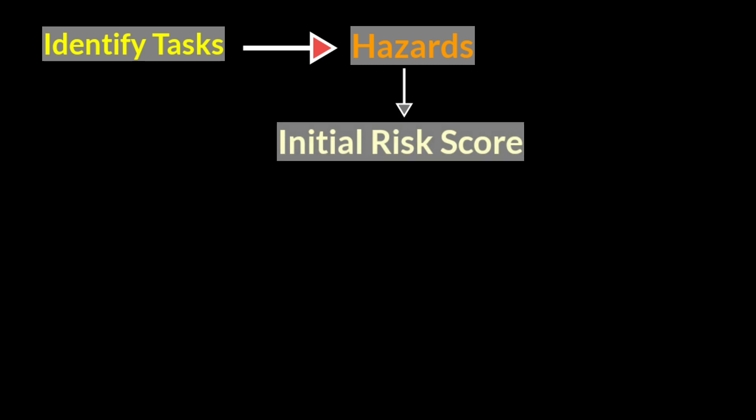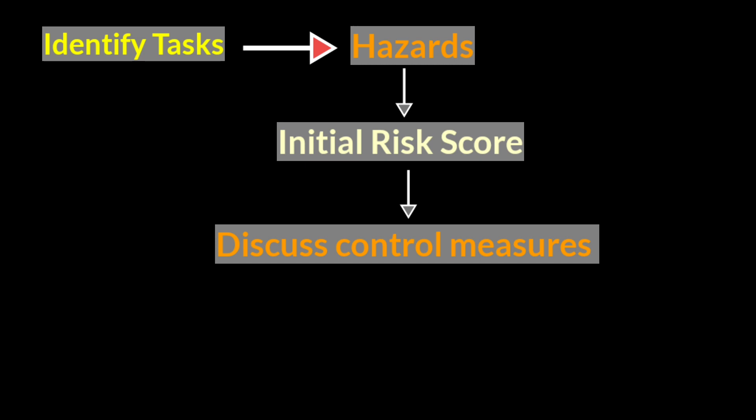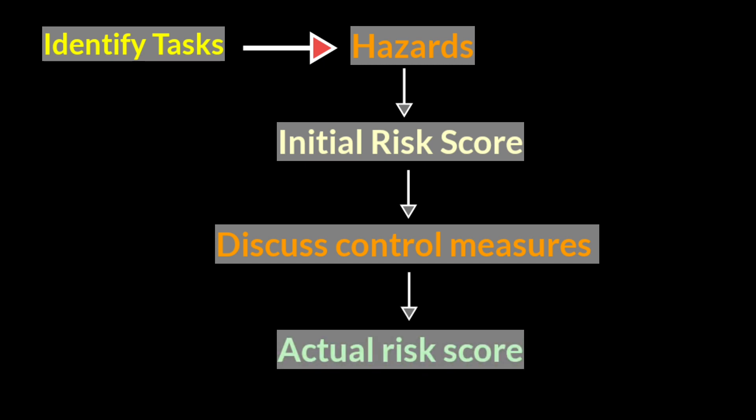After identifying the risk score, we have to discuss what are all the corrective and control measures that can be taken to reduce that risk score. After discussing about these measures, we have to find what will be the actual risk score if we implement those control measures. After finding the actual risk score, you have to implement all the control and corrective measures discussed.